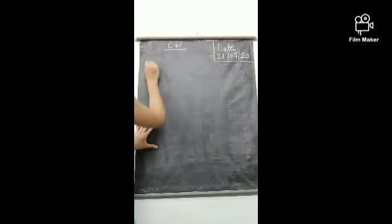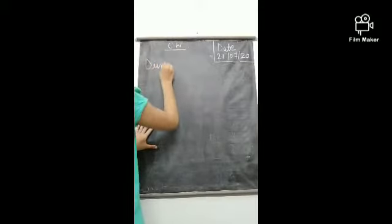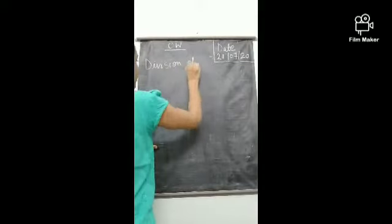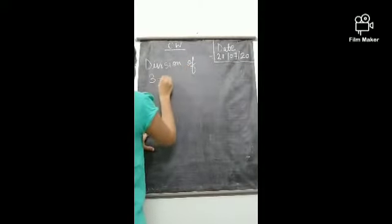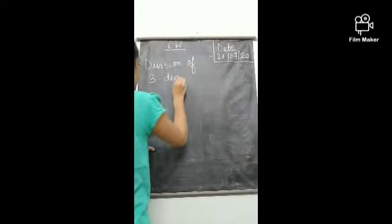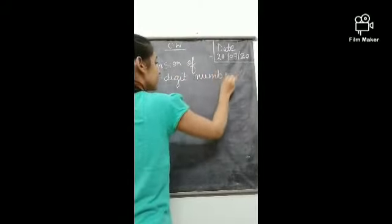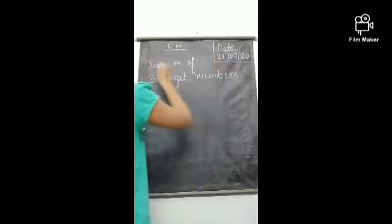Now write down class work. Then write down the heading: Division. Division of three-digit numbers.